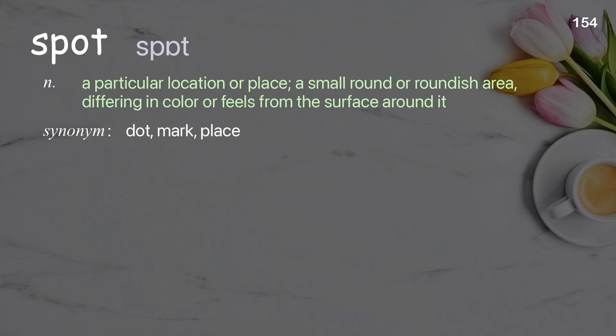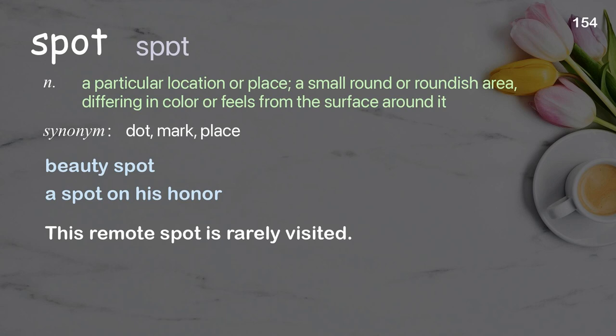Spot: a particular location or place; a small round or roundish area differing in color or feel from the surface around it. Examples: a spot on his honor; this remote spot is rarely visited.